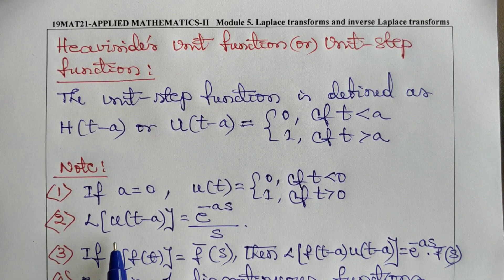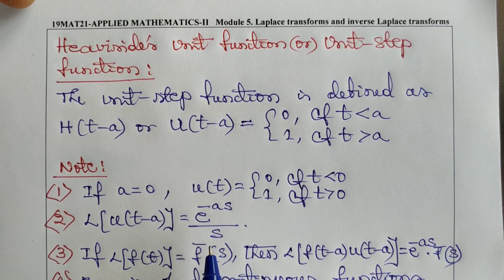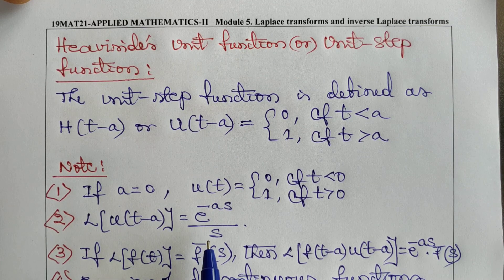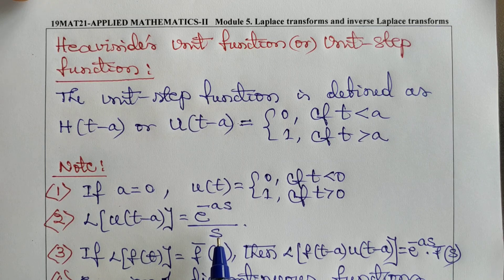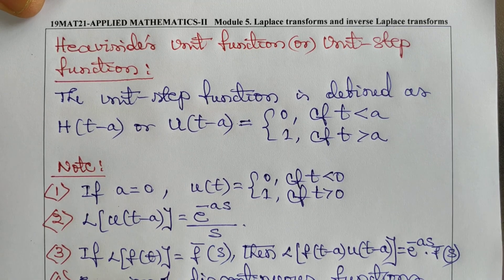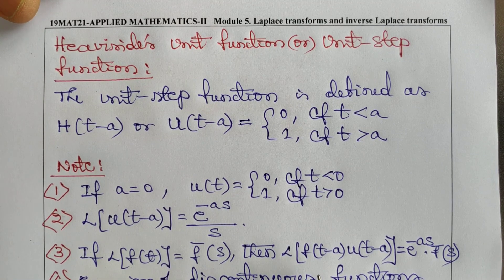Note 2: The Laplace transform of u(t - a) is equal to e^(-as) / s. Remember: the Laplace of the unit step function or Heaviside's unit function equals e^(-as) / s.